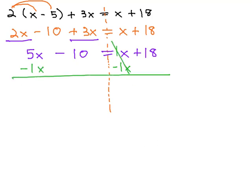When we do that, the 1x's will subtract out to 0 on the right. On the left side, we've got 5 minus 1, or 4x's, minus 10 equals 18.